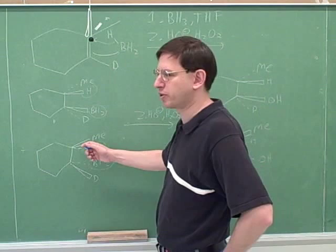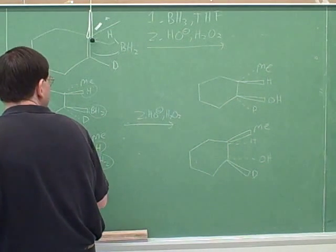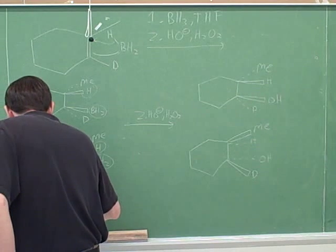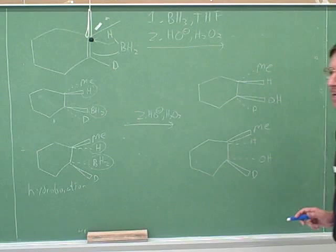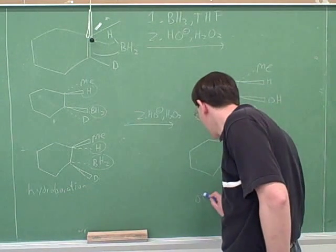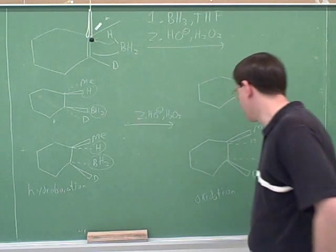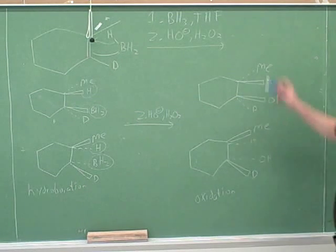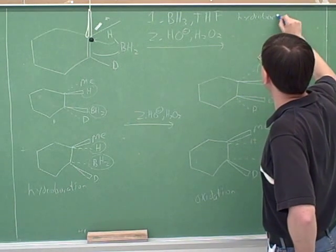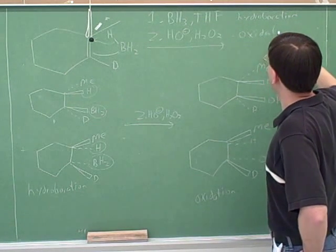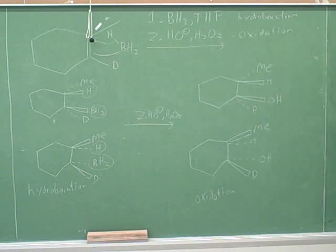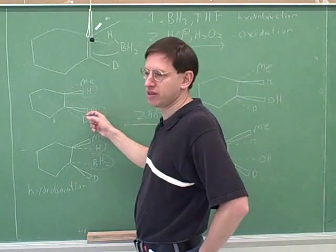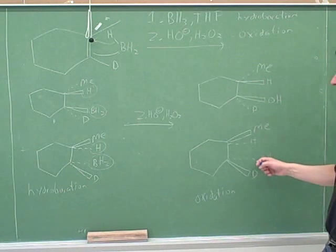Remember, the first step here is called hydroboration. And the second step is called oxidation. It makes sense that we would call this oxidation because we're forming a new bond to oxygen. Oxidation is when you form a new bond to oxygen. Well, that's what we're doing here. So overall, this is called hydroboration oxidation. Pretty scary name. Hydroboration oxidation. Why is it called hydroboration? Because in the first step we add the hydro and the boron. And then oxidation because then we replace the boron with a bond to oxygen.